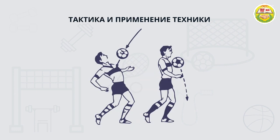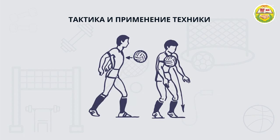Рассмотрим ситуацию, когда от игрока требуется после остановки совершить перевод мяча. В этом случае принимающее движение выполняется за счет поворота корпуса влево или вправо, в зависимости от положения мяча. Неверное исполнение техники меняет траекторию мяча — он будет отскакивать от игрока далеко в сторону. Это связано с тем, что техника выполнена выдвинутым вперед плечом, а не грудью.